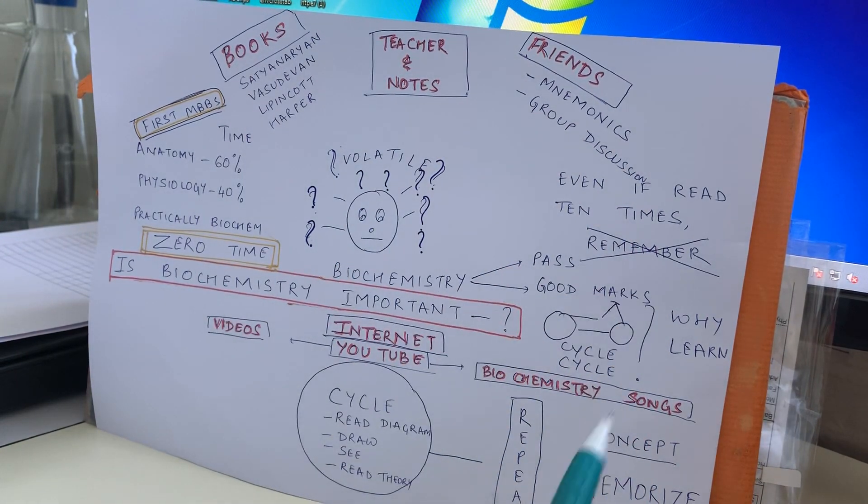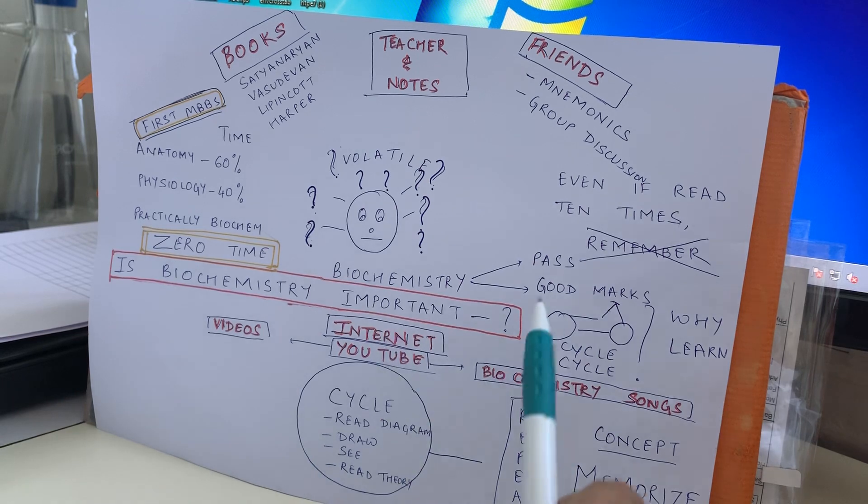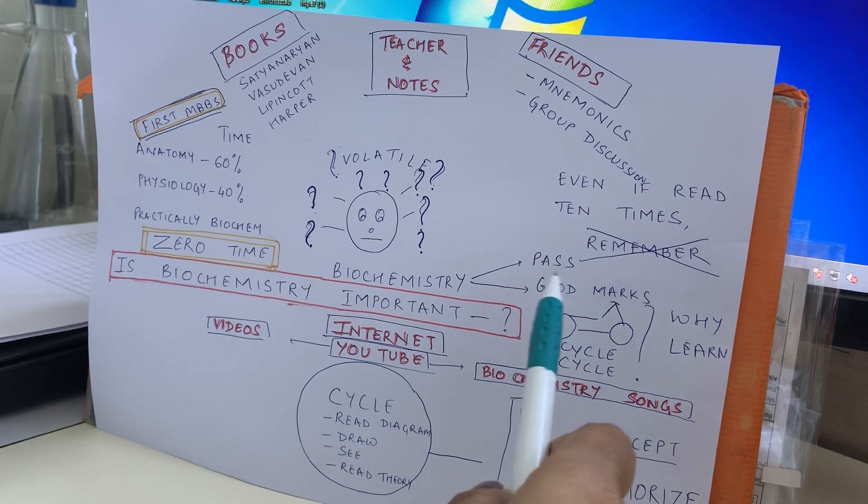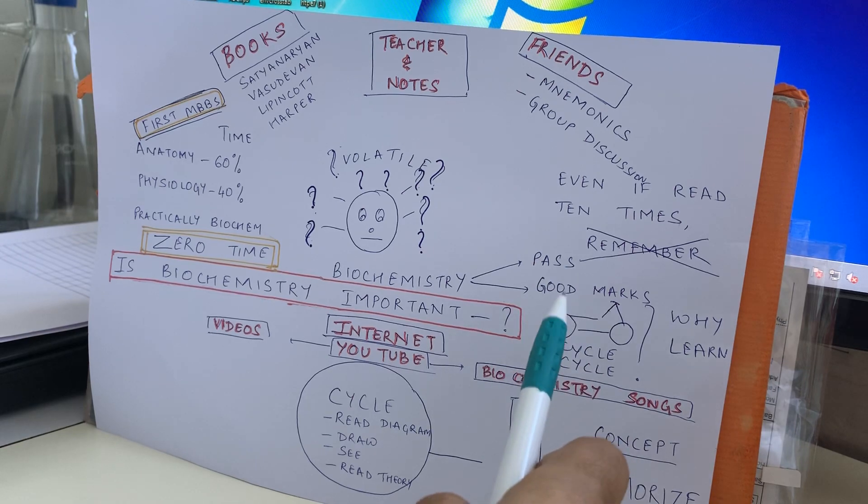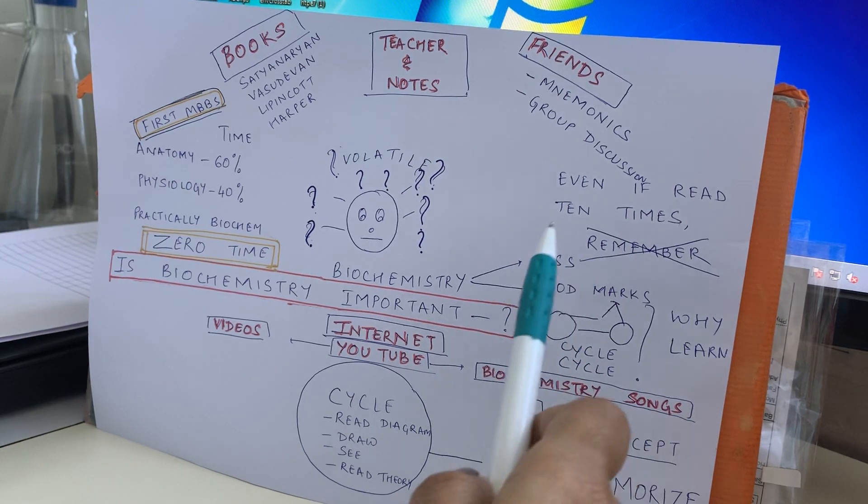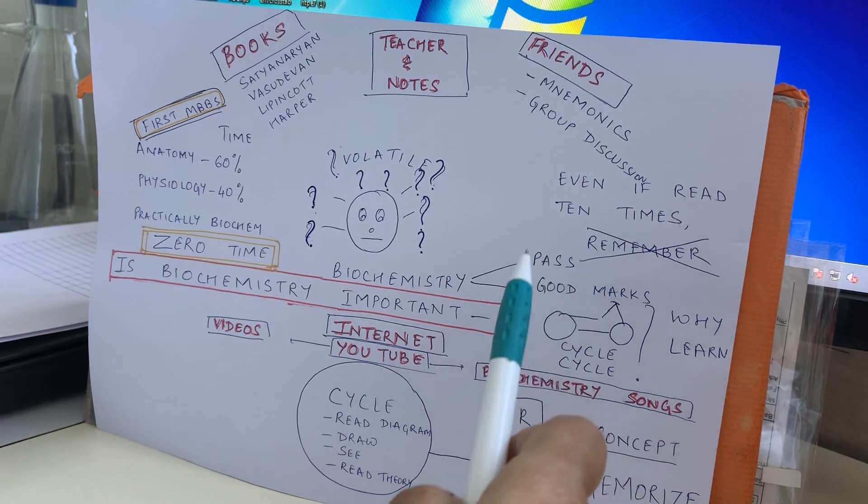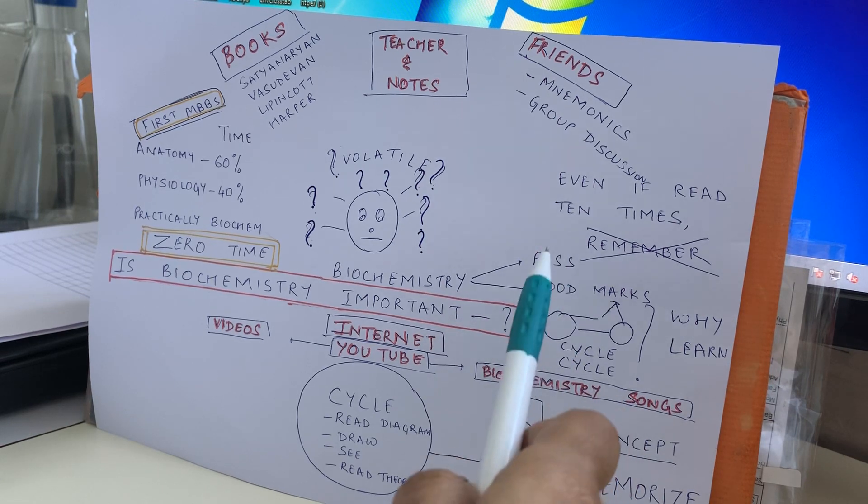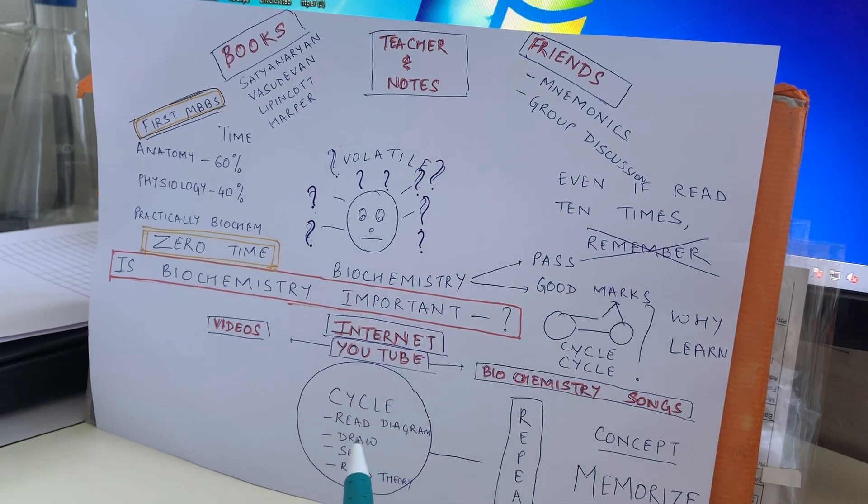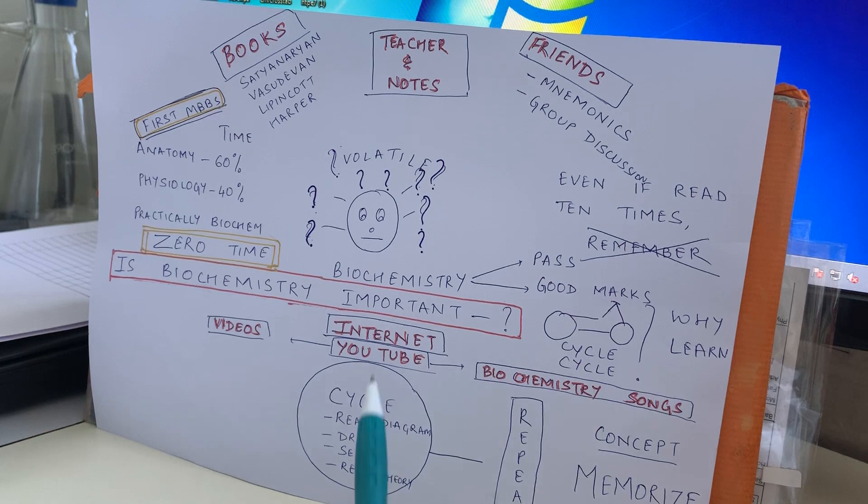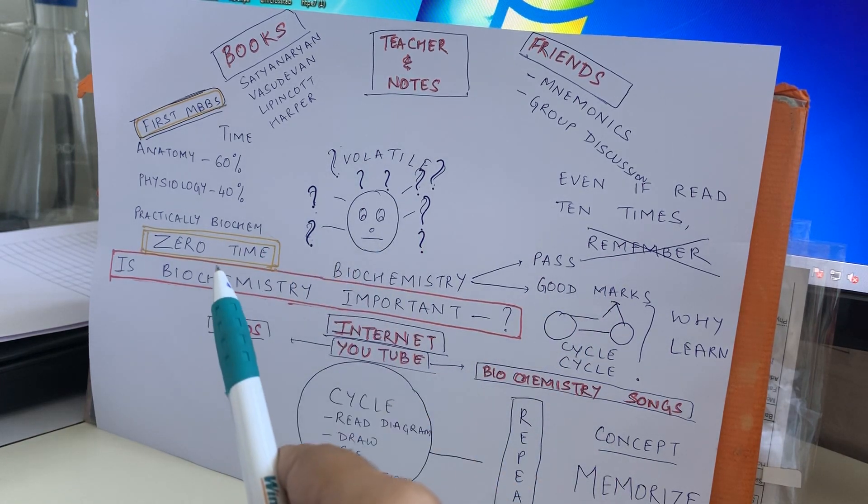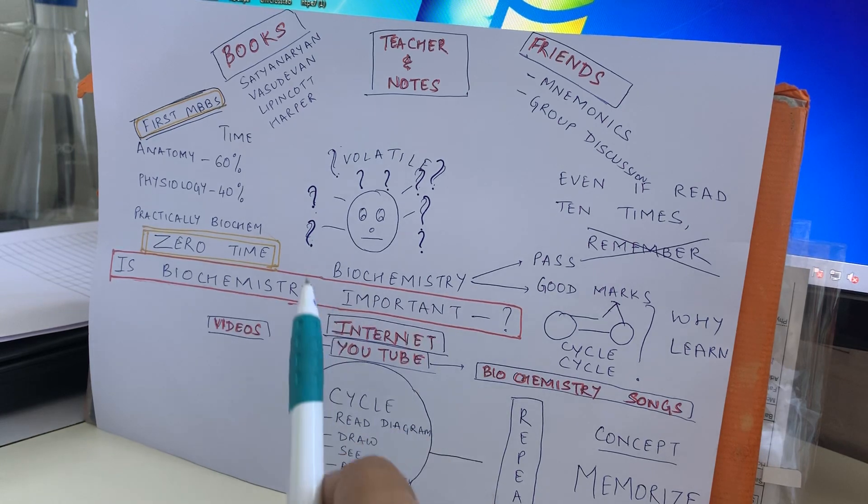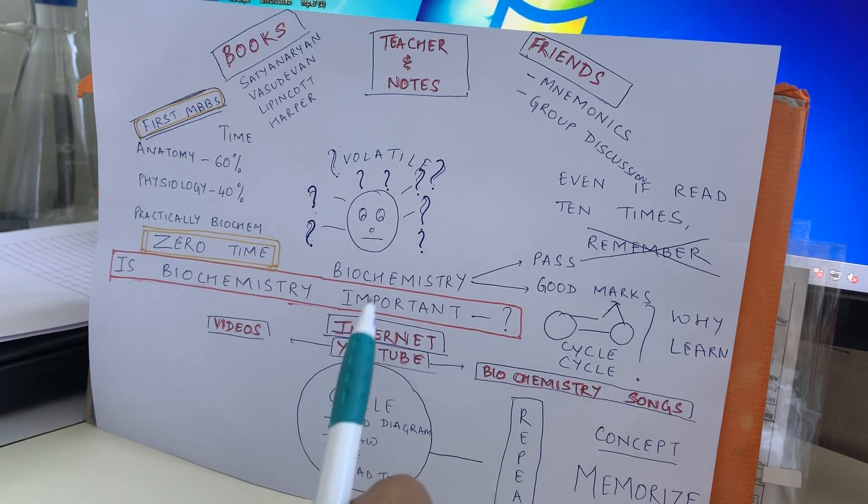First thing, remember you have to pass biochemistry. Passing is the most important thing. The second thing is good marks - if you want to get good marks you have to study it, but you have to pass biochemistry. You should know what are the important topics. But the question is: first you don't remember it, second it is volatile, third you don't have time, and fourth, very important question is biochemistry really important in MBBS, in medical, in dental?